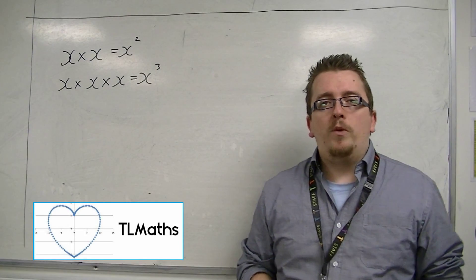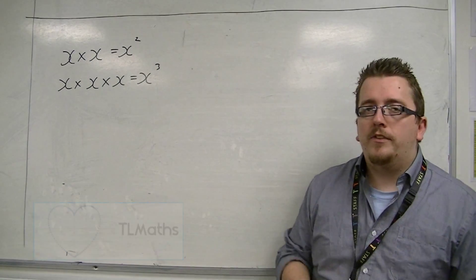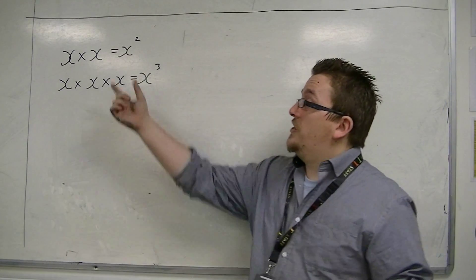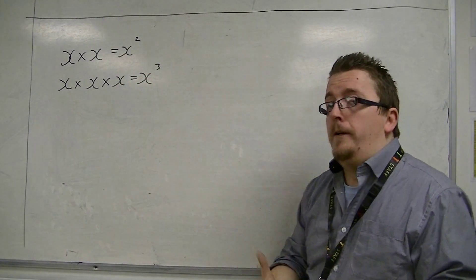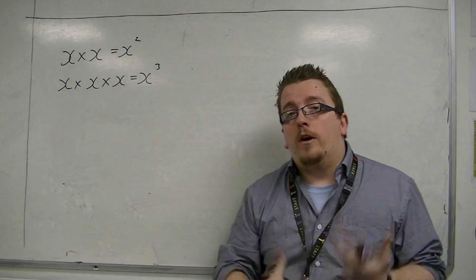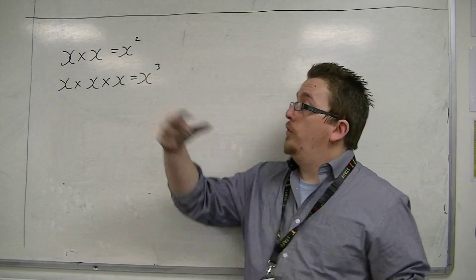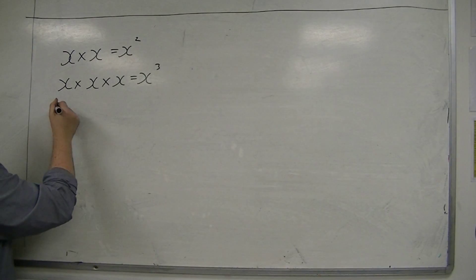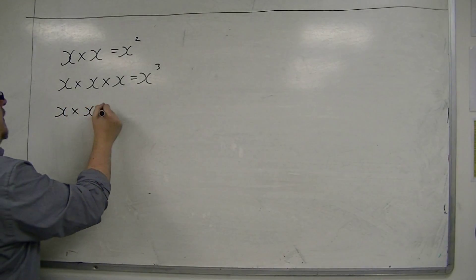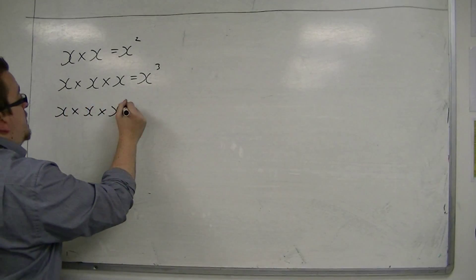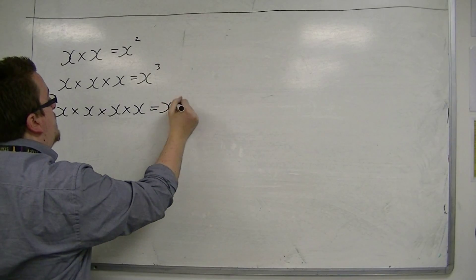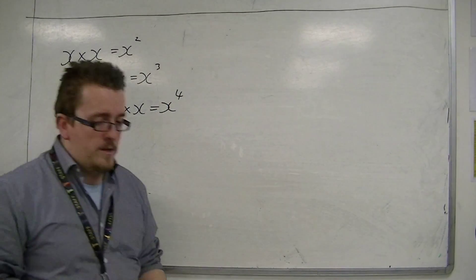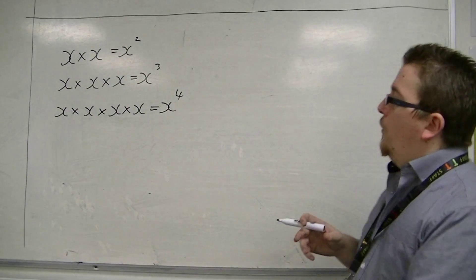In the previous video, we looked at multiplying x's by itself. So x times x would be written as x squared. Likewise, x times x times x would be written as x cubed. And you could take one step further — x times x times x times x would be x to the power of 4, so x multiplied by itself 4 times.